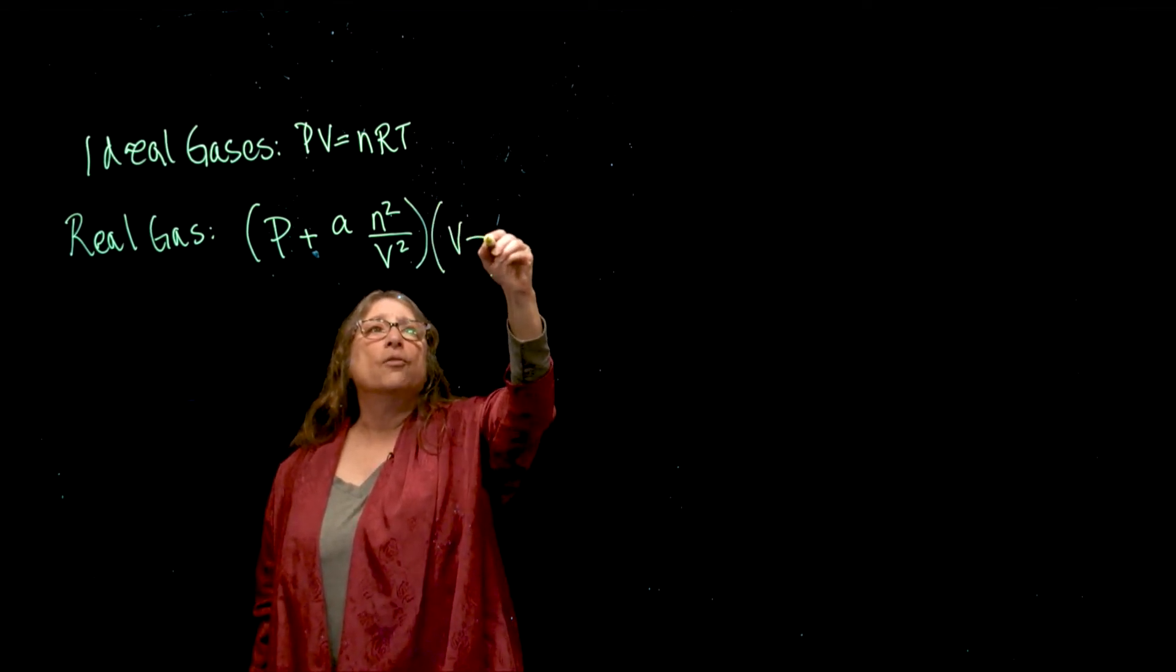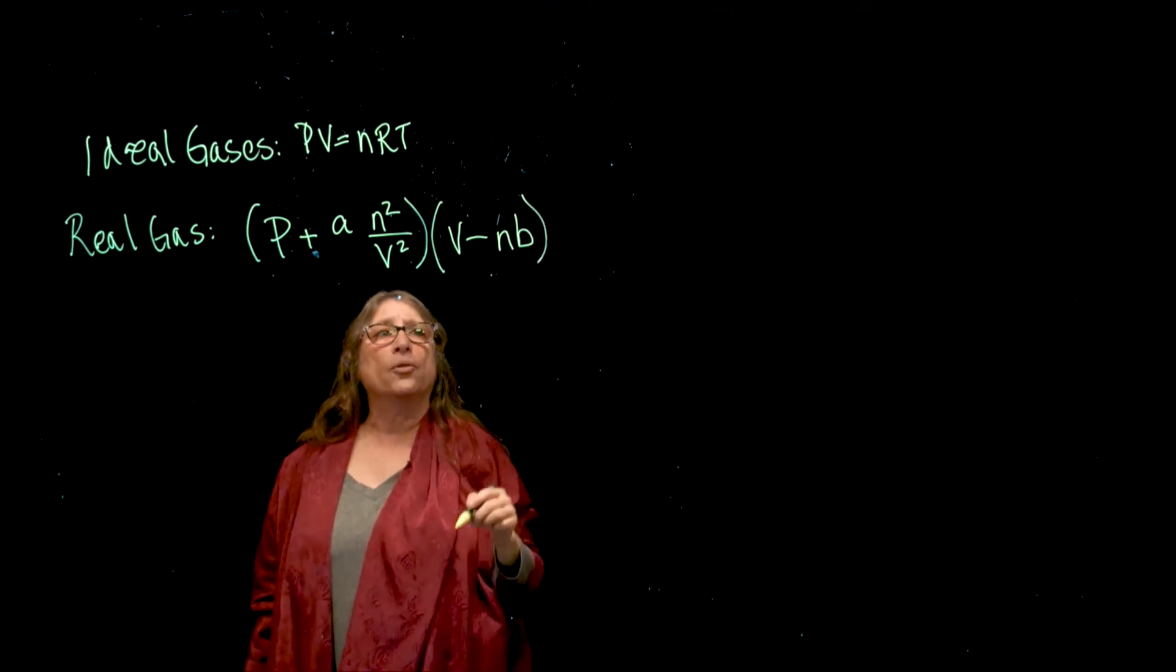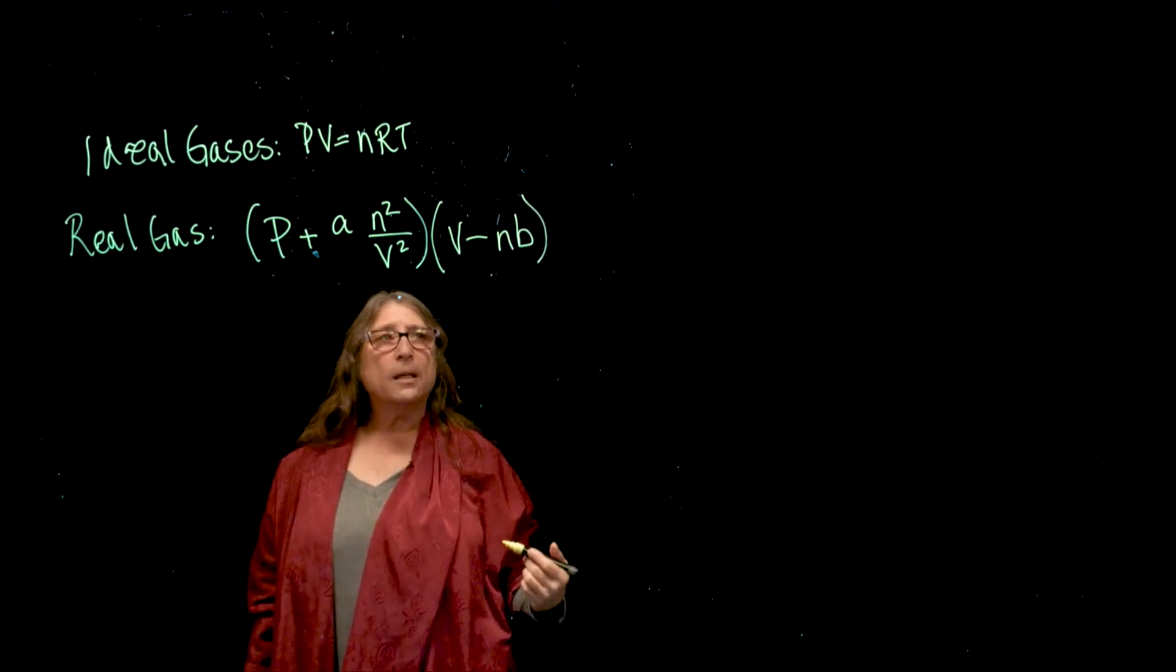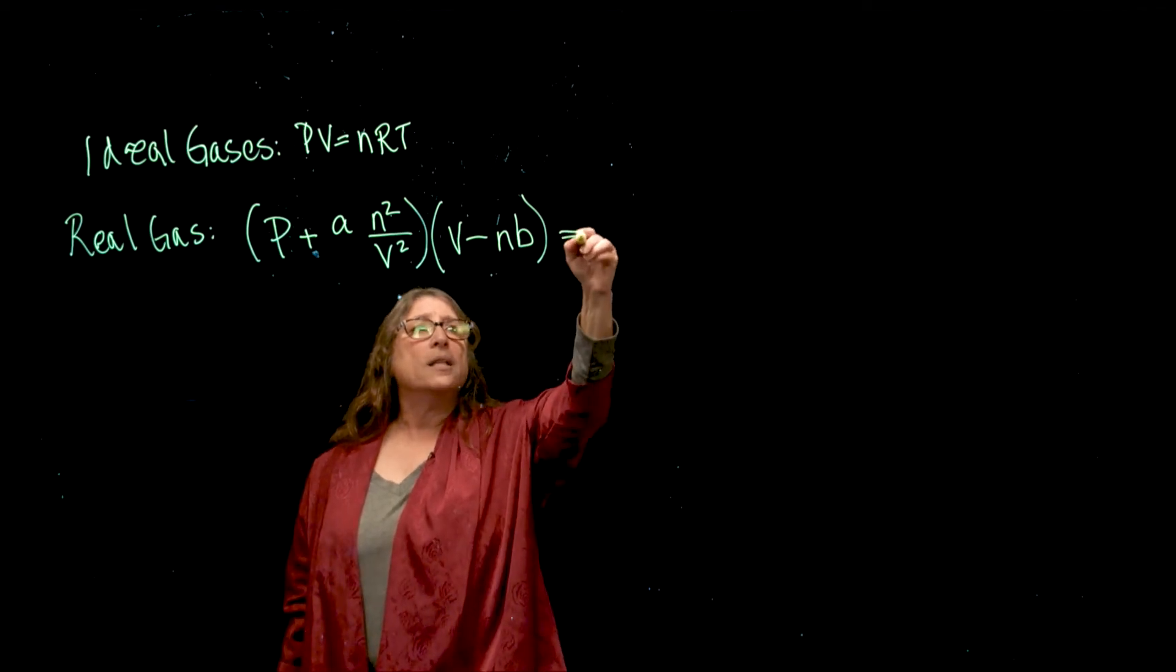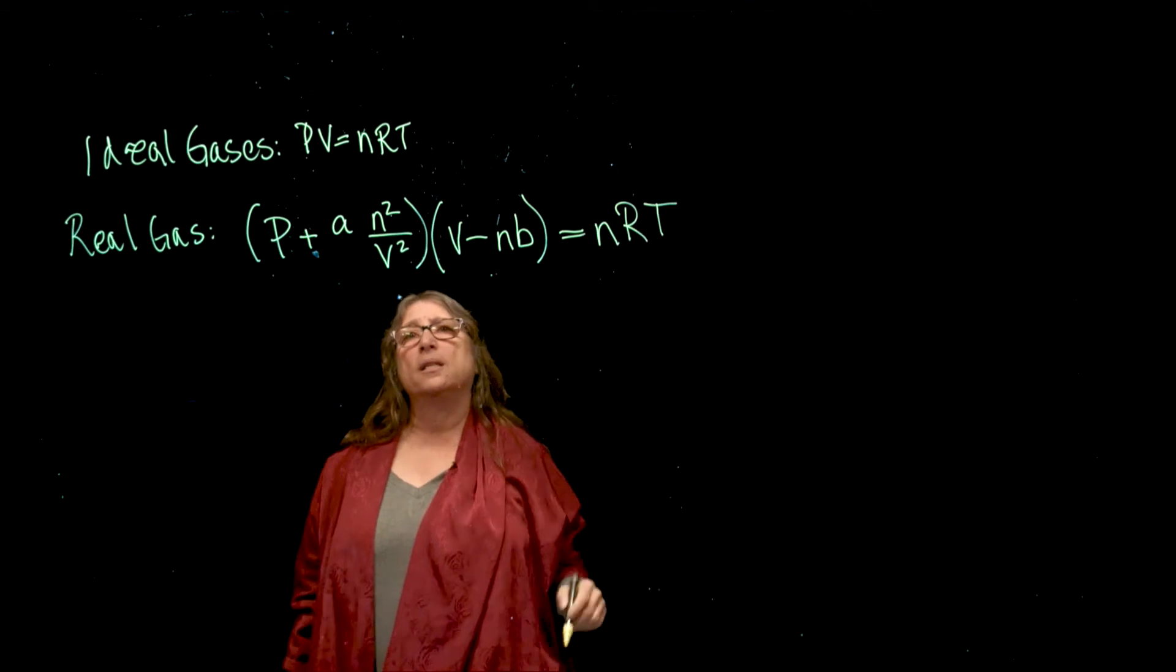We're going to adjust the volume by subtracting off the number of moles times the Van der Waals B constant. And that's equal to n times R, our gas constant, times T, the temperature.